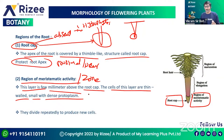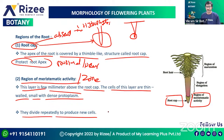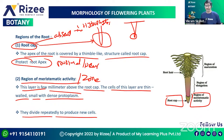These cells are small, thin, and have dense protoplasm. They divide repeatedly and provide new cells, allowing the root to grow and develop. These are the meristematic cells.